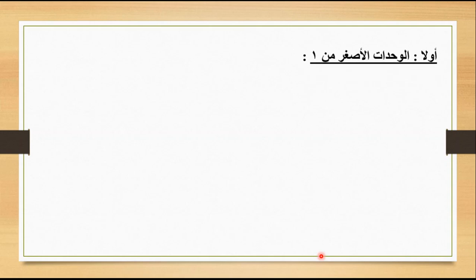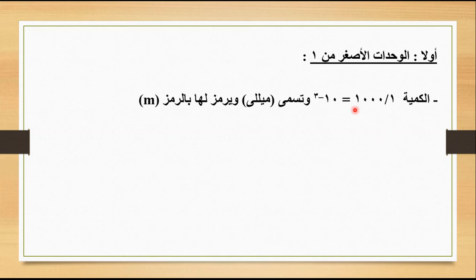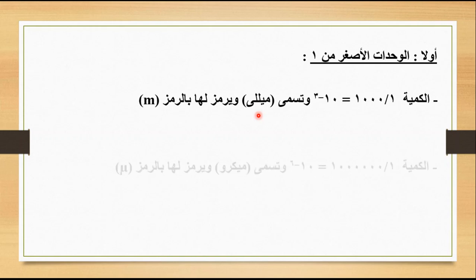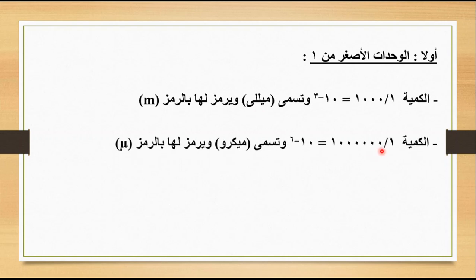هنتكلم الأول عن الوحدات الأصغر من واحد. لما بنقول واحد على الألف، يبقى عندي هنا 10 أس سالب 3. في الحالة دي بيُطلق عليها ملي، ويُرمز لها بالرمز m. الأصغر من الملي بعد كده هو المايكرو، وده بيساوي 10 أس سالب 6، يعني واحد على المليون. ويُرمز للمايكرو بالرمز μ.